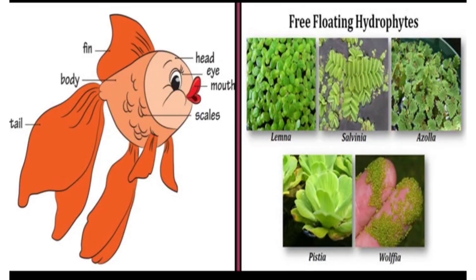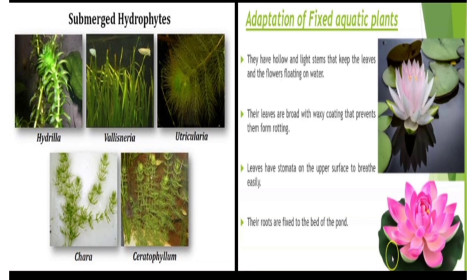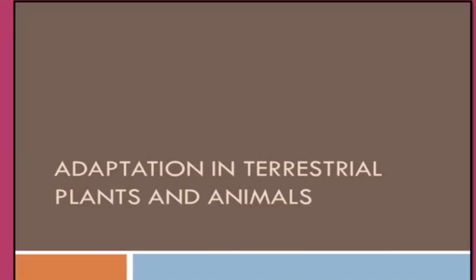Now the adaptation in aquatic plants. Aquatic plants are called hydrophytes and can be of three types: first, floating plants; second, submerged plants; and third, fixed plants.